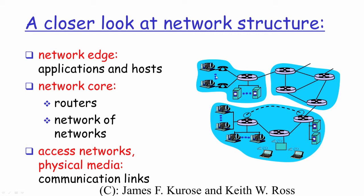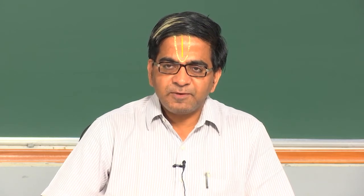The next part is the network core. The network core basically consists of routers and switches configured and running. As we discussed in the previous module, the router device is responsible for forwarding packets from a given source to a given destination. If my packets need to reach a network that is 10 hops away, the router device is responsible for that.